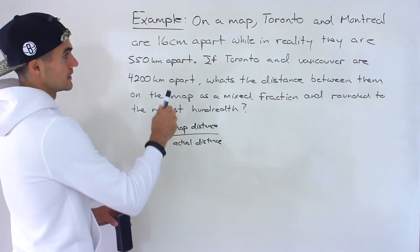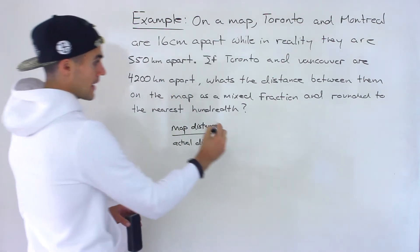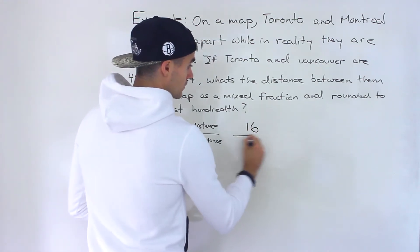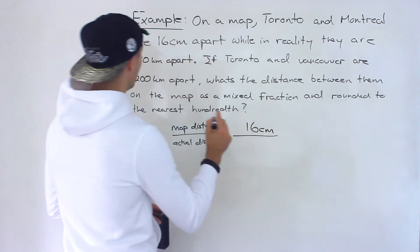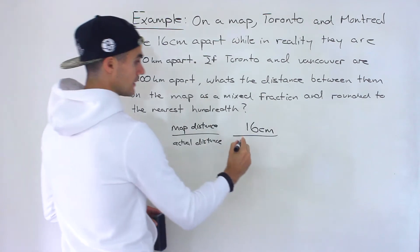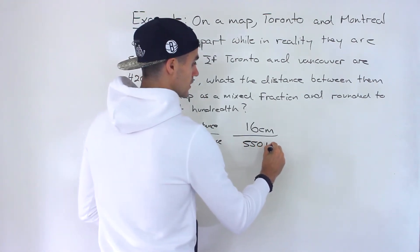So notice that Toronto and Montreal on the map they're 16 centimeters apart while in reality they are 550 kilometers apart.